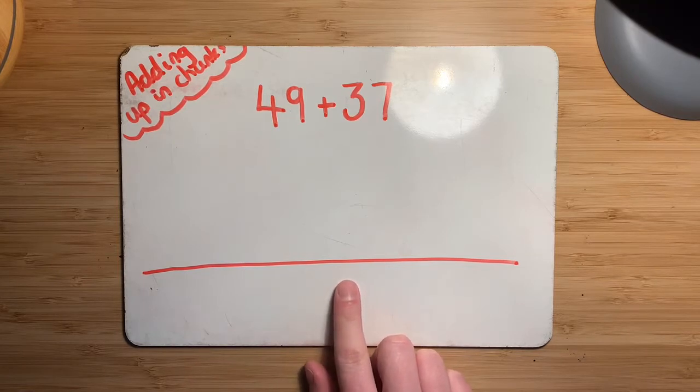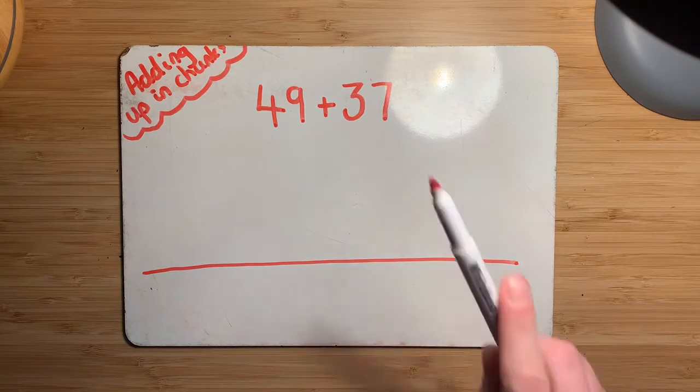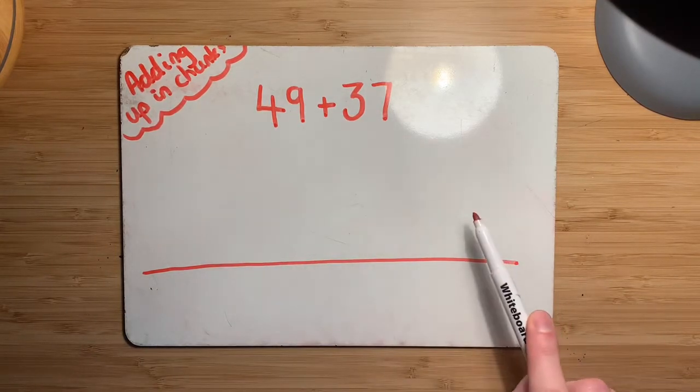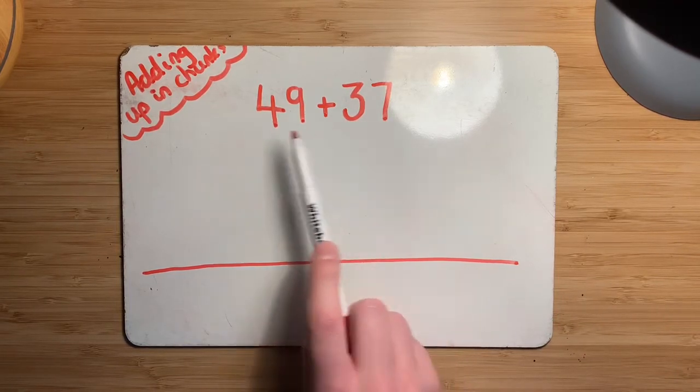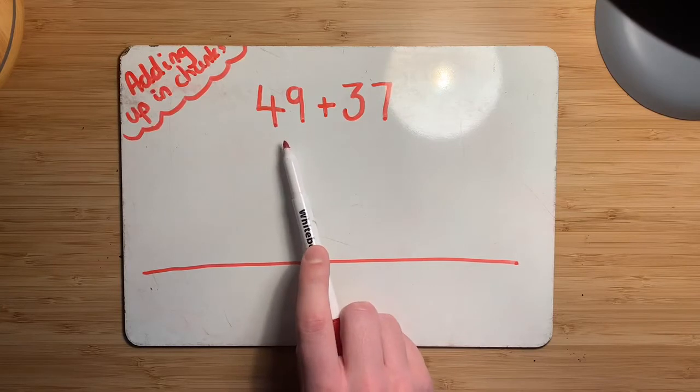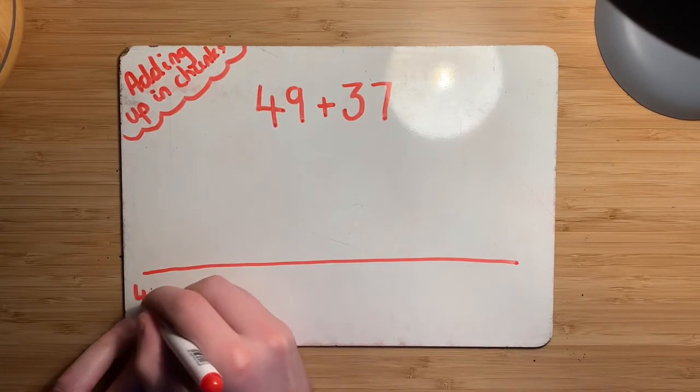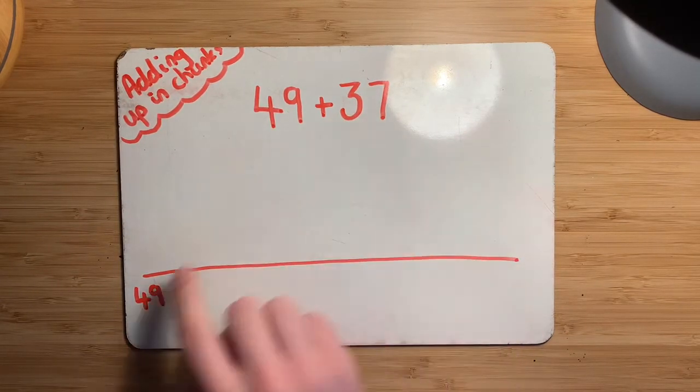So the first thing we need to do is we need to chunk one of the numbers up. And you might remember back when we were doing it, we said that it made most sense to chunk up the smaller number because then there's less chunks to have to add on. So what we will do is we'll start with the bigger number. So regardless of what order they were around, we would probably always want to start with whatever number was biggest. So I'm going to put my 49 over this side here because that's where we're going to start. And we're going to add this 37 on in chunks.